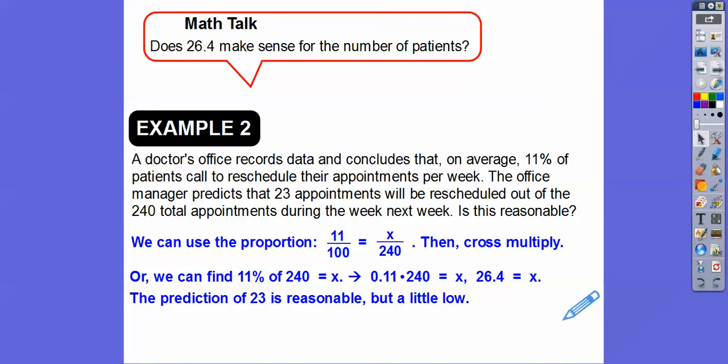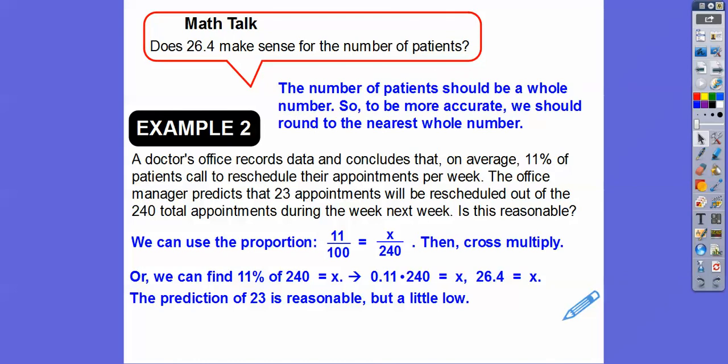How about this? Does 26.4 make sense for the number of patients? Can we have a 0.4 of a patient right there? No, it's got to be a whole number. So the number of patients should be a whole number. So to be more accurate, we probably round it to 26, the nearest whole number right there.